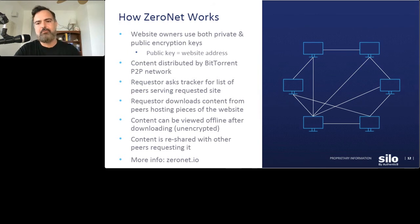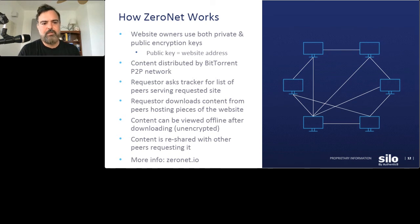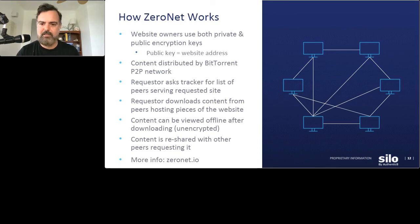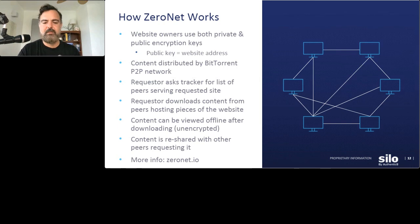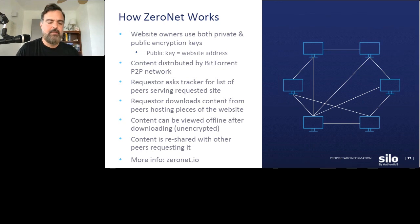There are public and private keys used, so if you're hosting a website your public key is essentially your website address. The content is distributed by BitTorrent — a peer-to-peer network where each person in the network can host a small piece of content. When content is first requested, the requester asks one of the tracking servers for a list of people that have part of the content, then the software finds those peers, downloads the pieces, and assembles it for viewing.